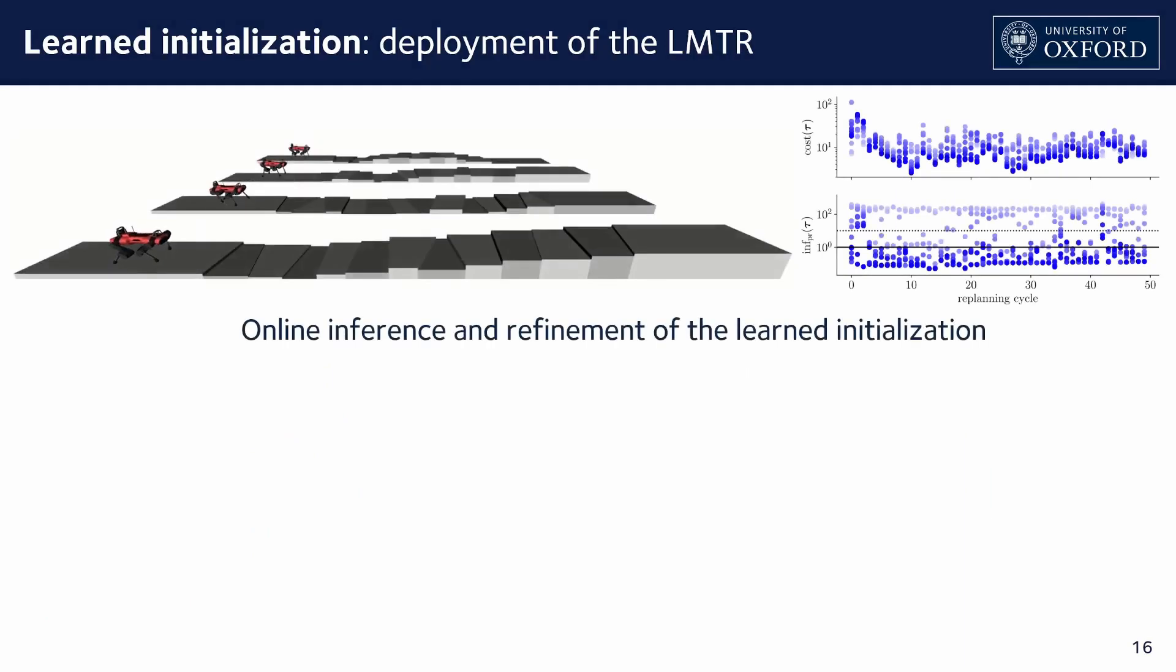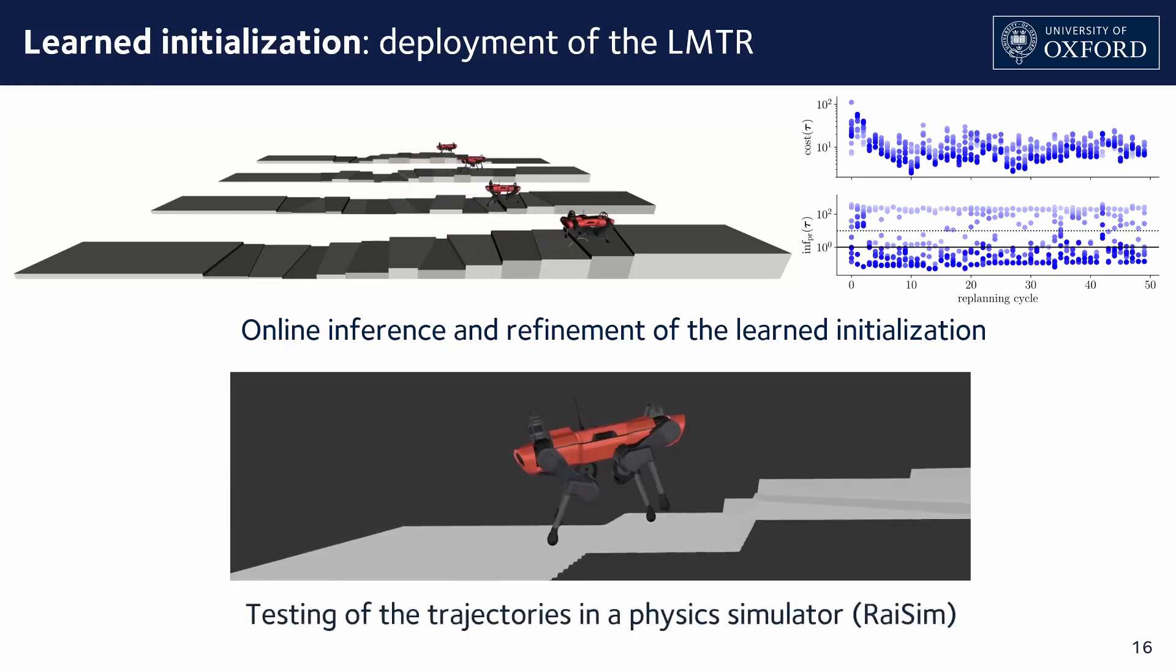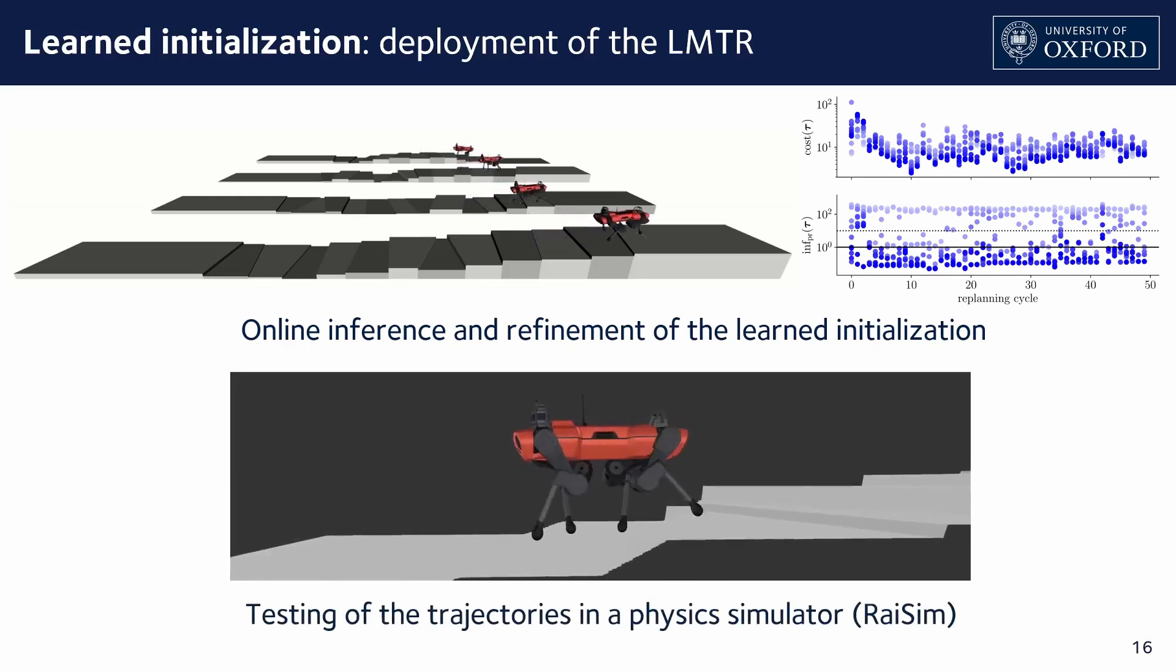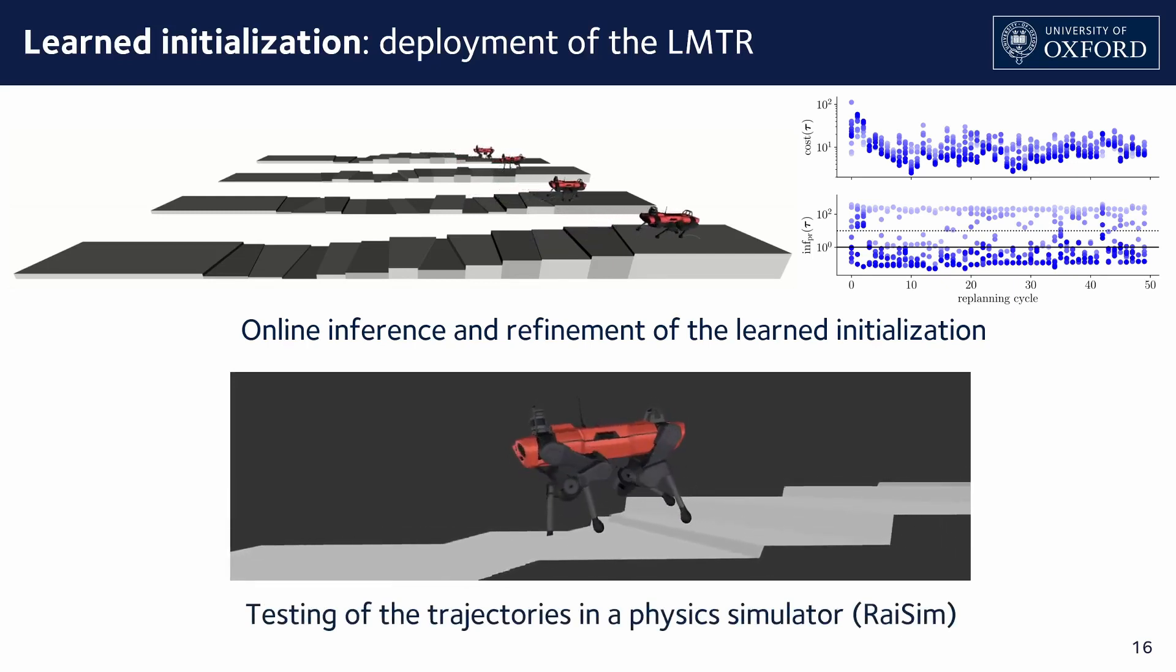We deployed the replanner initialized by the LMTR on a series of arbitrary steps. The inferred initial guesses were refined online by the optimizer. In the figure, the cost and primal infeasibility values at the start and end of each replanning cycle are shown in light and dark shades of blue respectively. In addition to this numerical analysis, we tested the trajectories in a physics simulator.